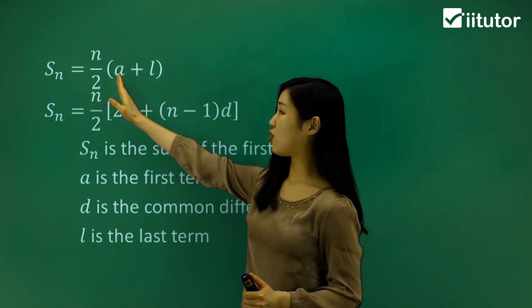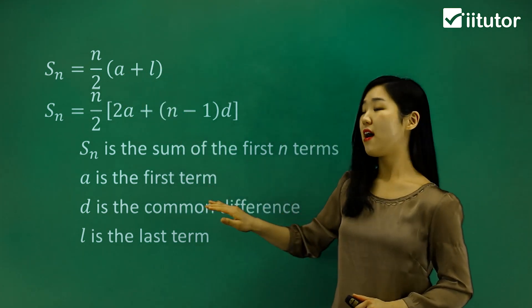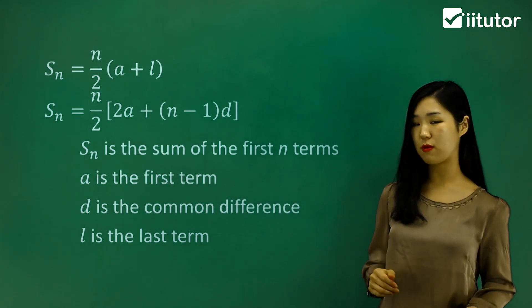The first one is where we have n over 2, a plus l. We know that n is the number of terms, a is the first term, l is the last term. So you'd use that formula if you know your first term and last term.